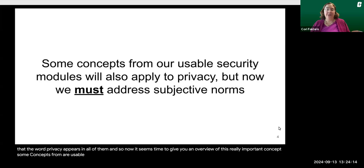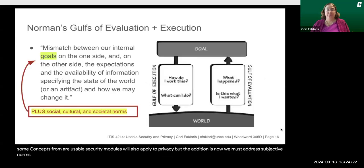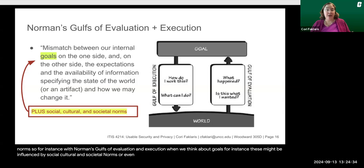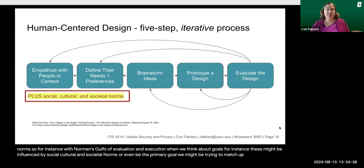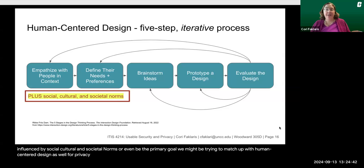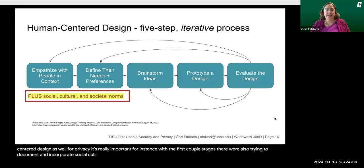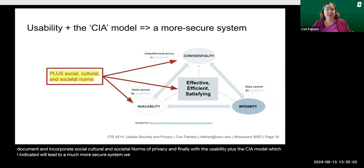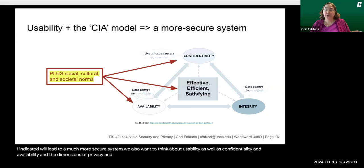Some concepts from our usable security modules will also apply to privacy, but the addition is now we must address subjective norms. For instance, with Norman's goals of evaluation and execution, goals might be influenced by social, cultural, and societal norms. With human-centered design, it's important in the first couple of stages that we also document and incorporate social, cultural, and societal norms of privacy. With the usability plus CIA model, we also want to think about usability, confidentiality, availability, and the dimensions of privacy and social, cultural, and societal norms.